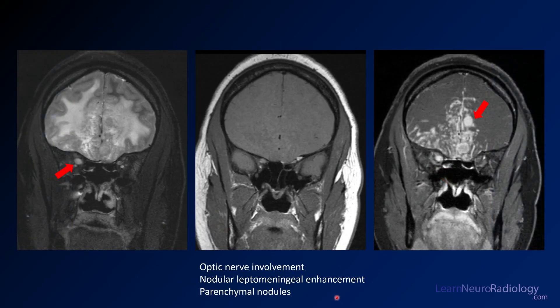Our case is a dramatic manifestation with a lot of leptomeningeal enhancement centered in the anterior cranial fossa, involving the optic nerves — avid enhancement of the right optic nerve explaining the vision loss — plus extensive parenchymal enhancement. This illustrates all features of sarcoidosis in a dramatic presentation.